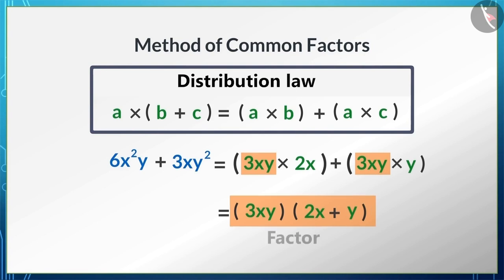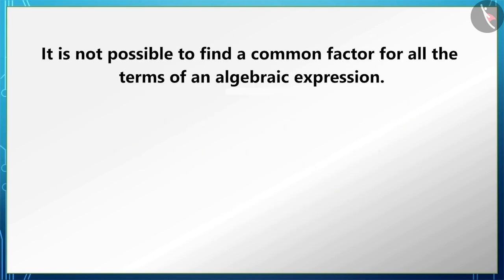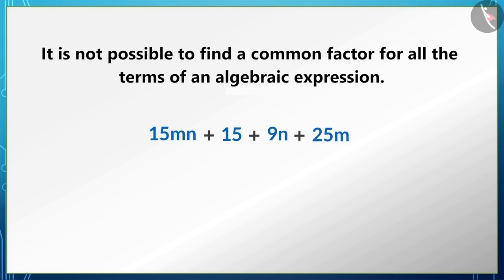That was easy, but we see that it is not always possible to find a common factor for all the terms of an algebraic expression. Look at this algebraic expression: 15mn + 15 + 9n + 25m. Here we don't have a common factor for all the terms.